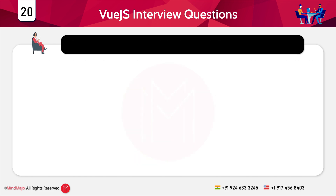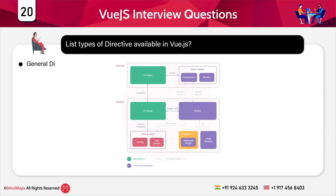The next question is: list the types of directives available in Vue.js. The directives supported in Vue.js are general directives, literal directives, empty directives, and custom directives.